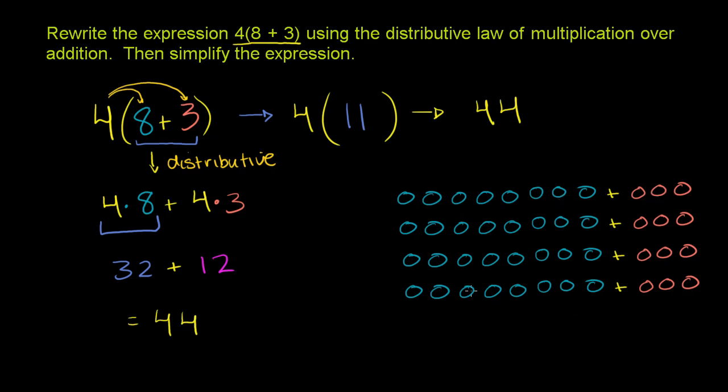Now what is this thing over here? If you were to count all of this, you would get 44. But what is this part? Well, that's 8 added to itself 4 times. So what's 8 added to itself 4 times? That is 4 times 8.